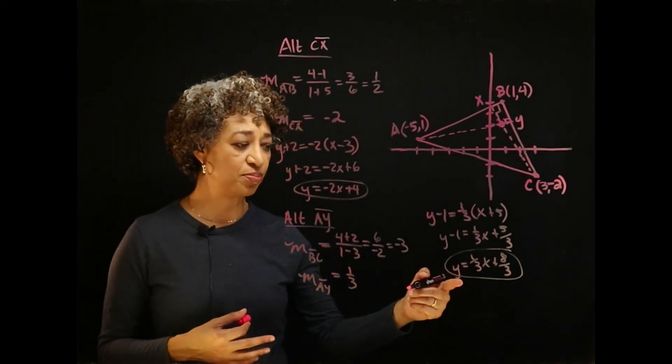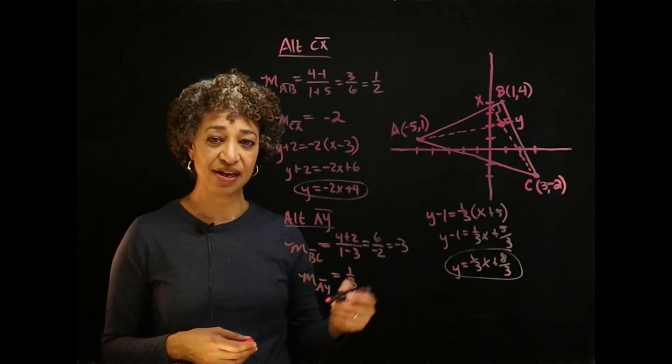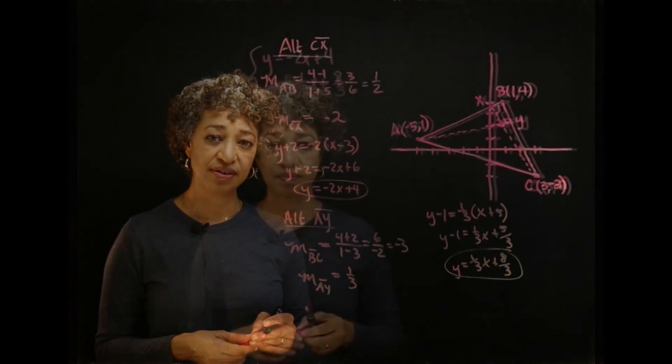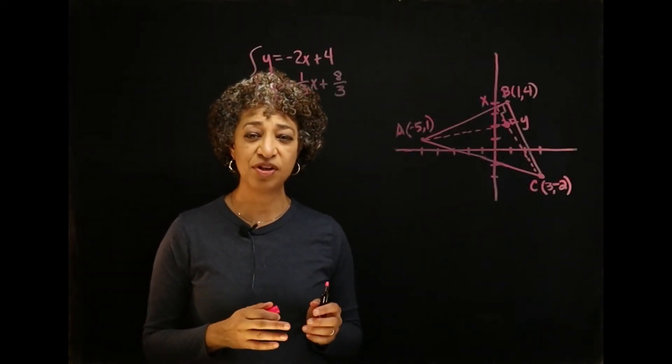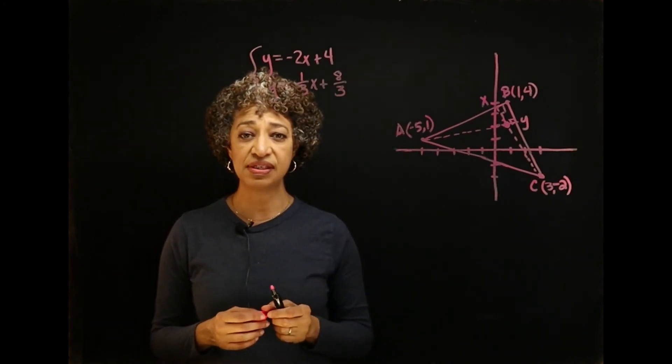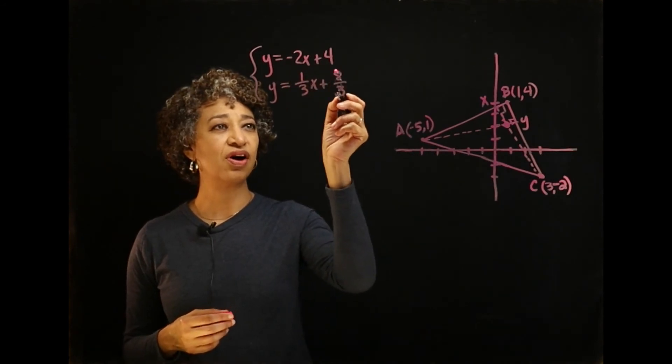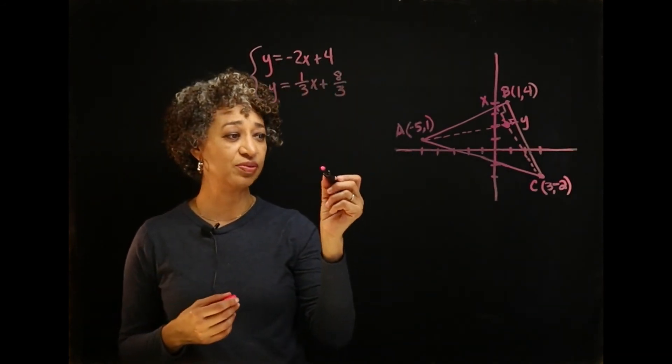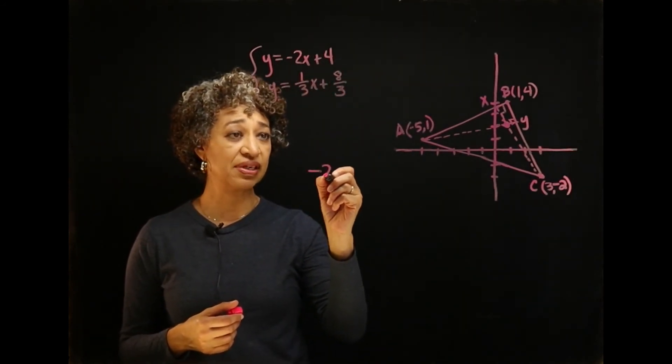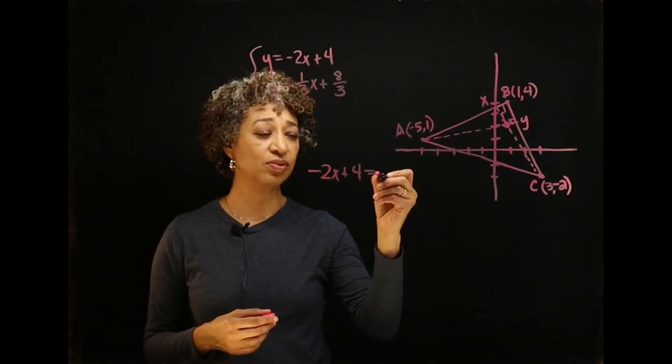Now I'm going to need to put these two altitudes in a system and we'll be able to find our orthocenter. I have put my two altitudes in a system for you. We will solve this system of linear equations by substitution. If two expressions are equal to the same thing, then they're equal to each other. So I'm going to set these two expressions equal to each other.